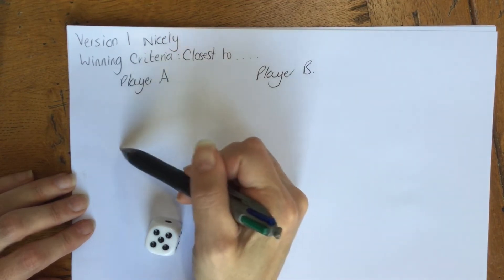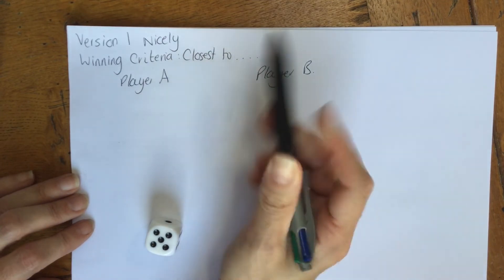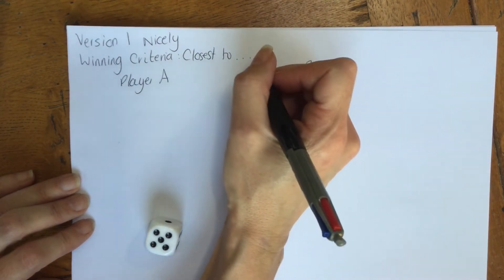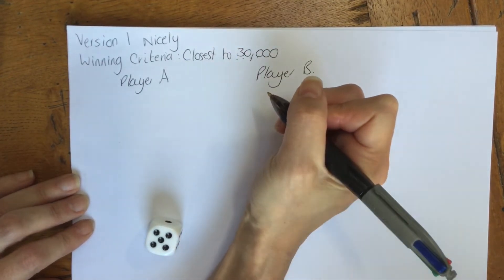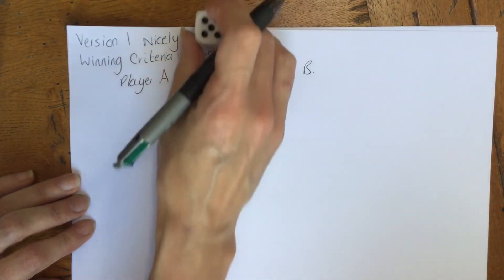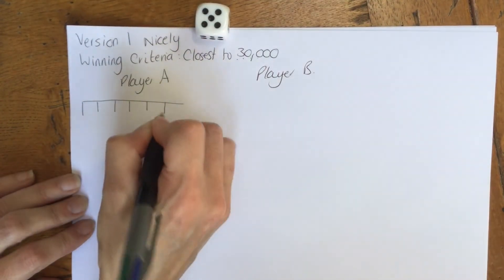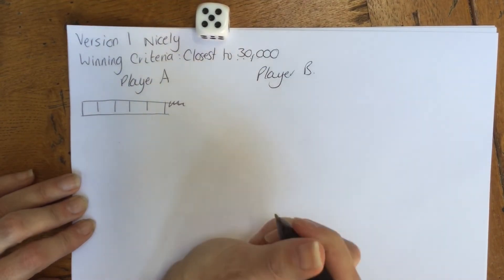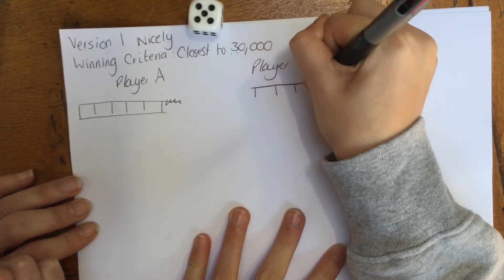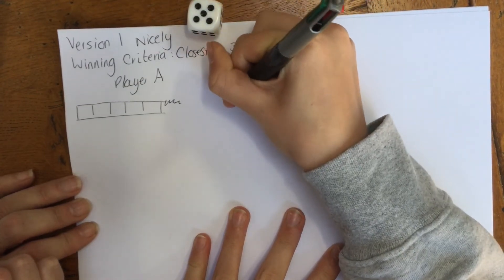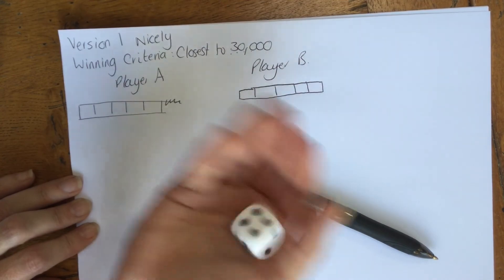This time we're still playing Nicely, only putting numbers on my own game board. But the winning condition is closest to 30,000. We've got to think more carefully about where we place numbers. Both players draw five boxes again. I roll a three and place it in the ten-thousands position. Player B thinks carefully about where to place their two. I roll a one.